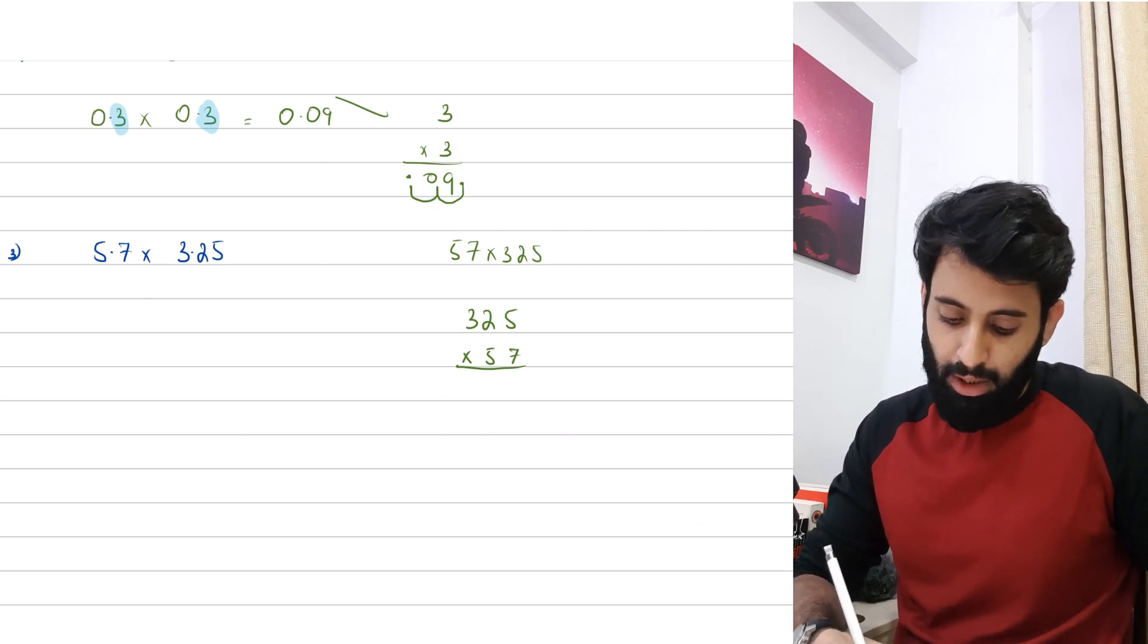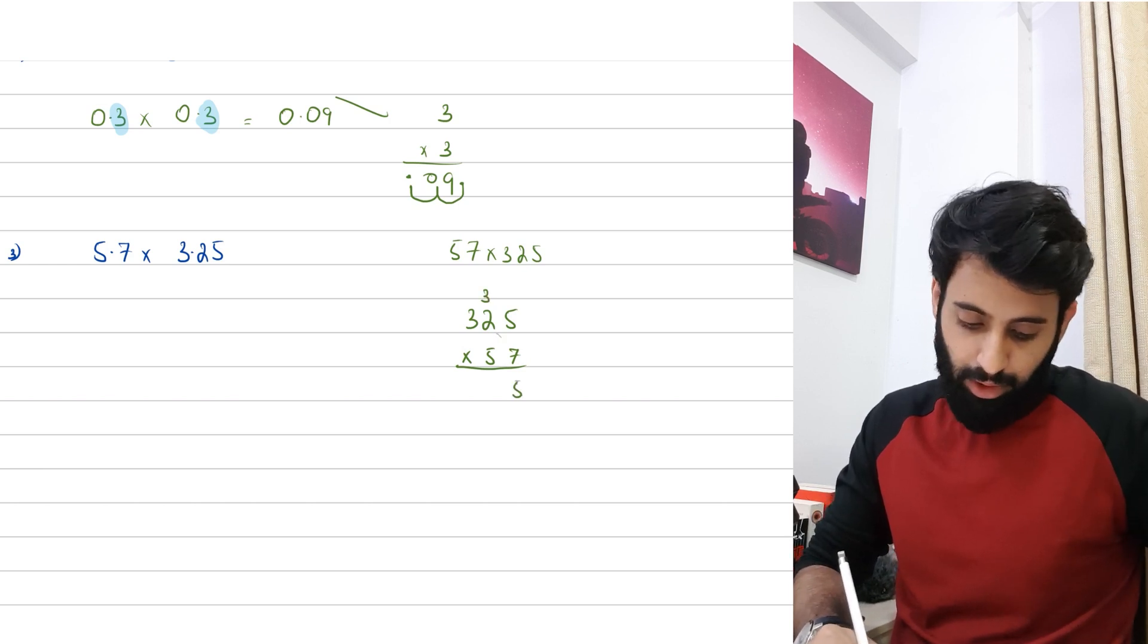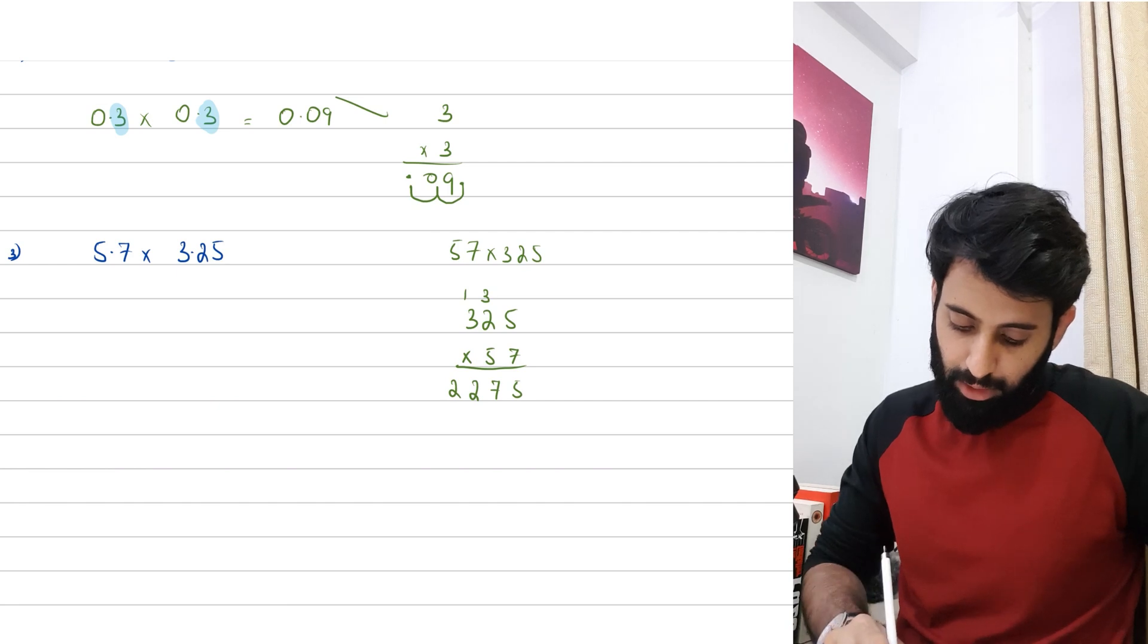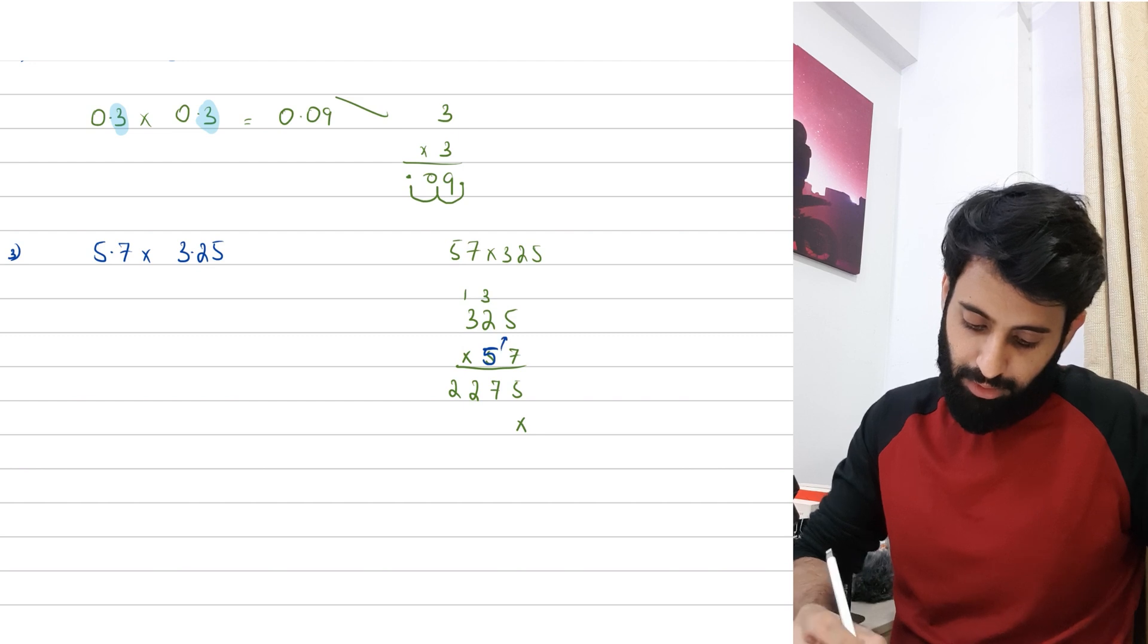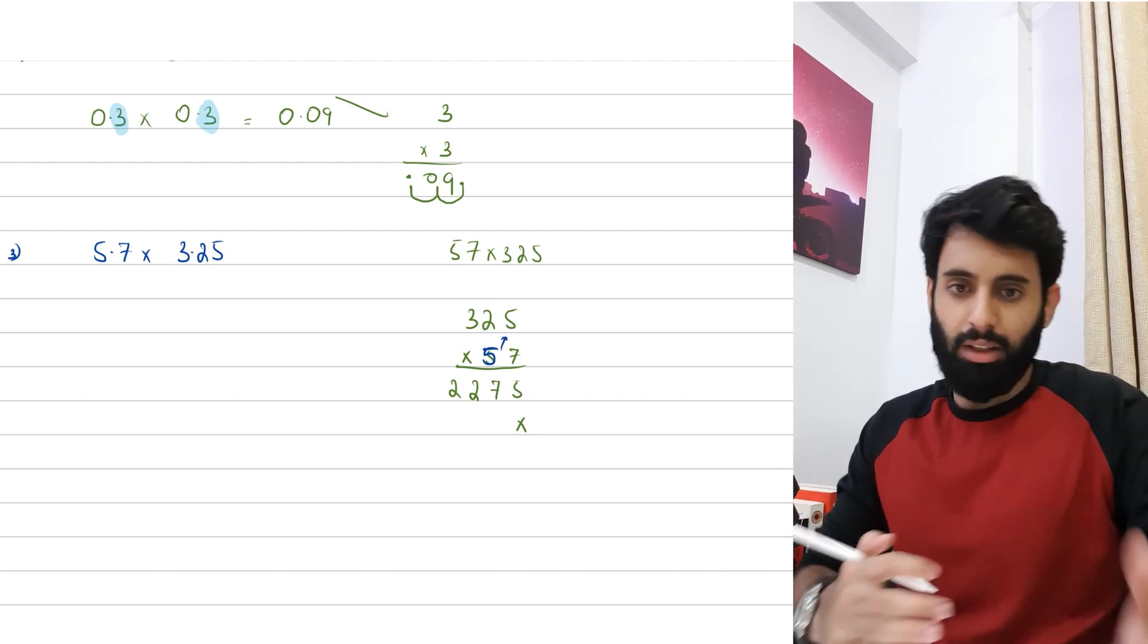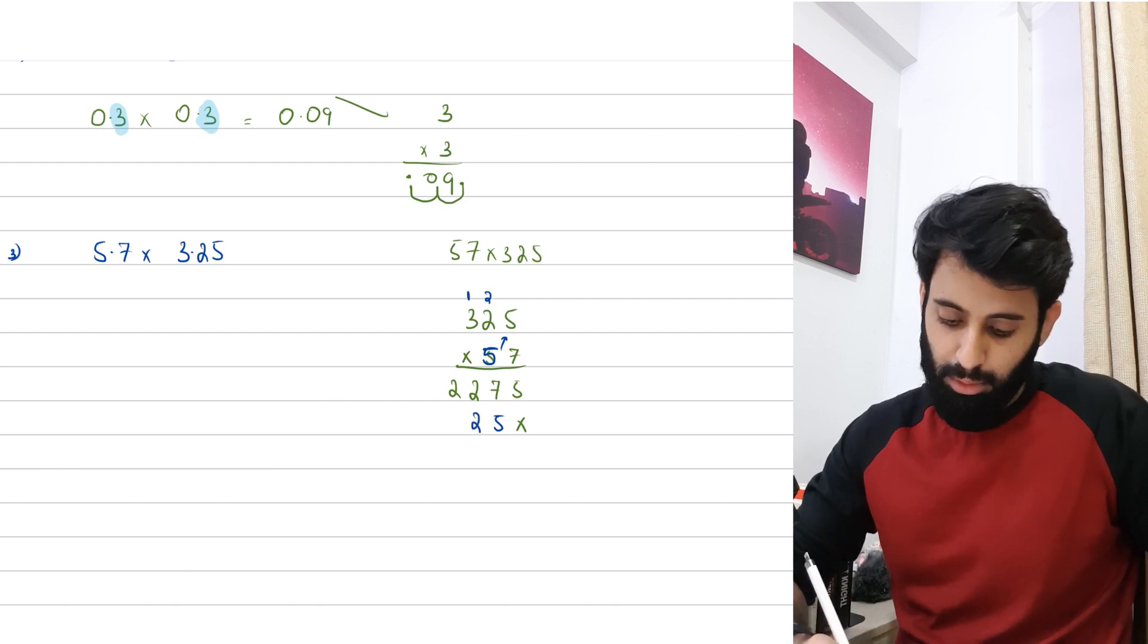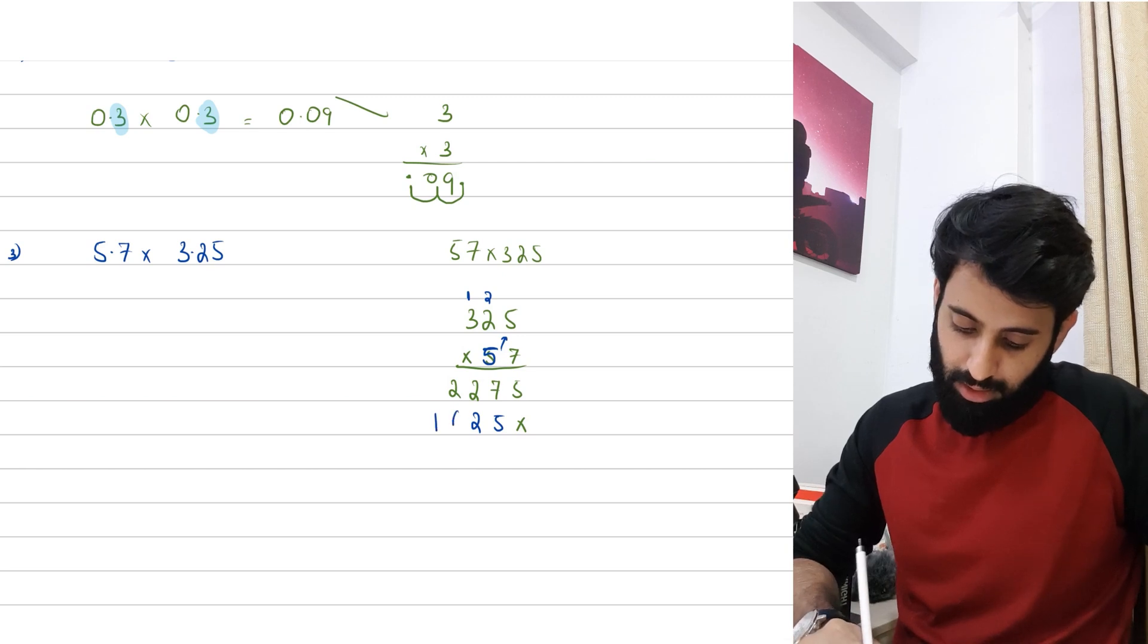So 7 times 5 is 35, then 7 times 2 is 14 and 14 plus 3 is 17, 7 times 3 is 21 and 21 plus 1 is 22. Then you put a cross here and now we start multiplying with this 5. 5 times 5 is 25, so I'm going to remove these two numbers so I can carry the newer ones. 5 times 2 is 10, 10 plus 1 is 12, so 1 carry and we have 2 here.